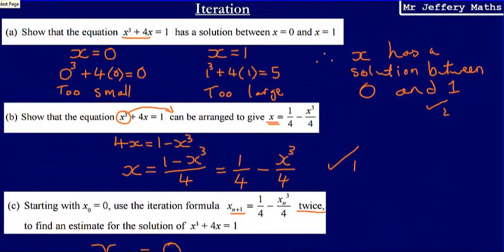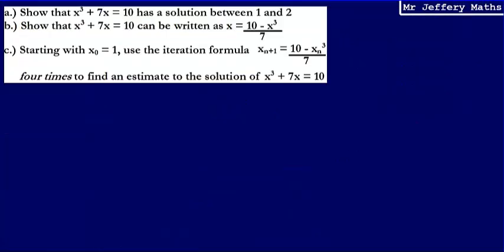Let's take a look at a second example. I'd recommend you pause the video, attempt the question first, then press play to see whether you got it right. For part A, we're asked to show that x cubed plus 7x equals 10 has a solution between 1 and 2.